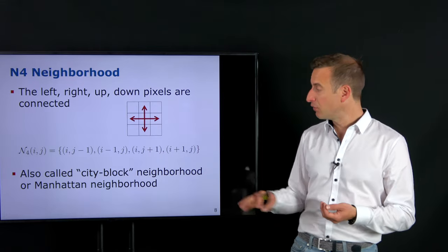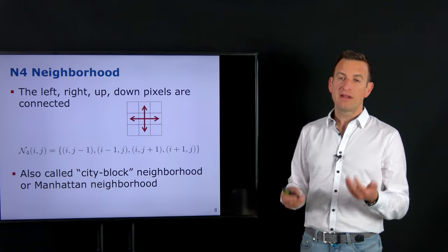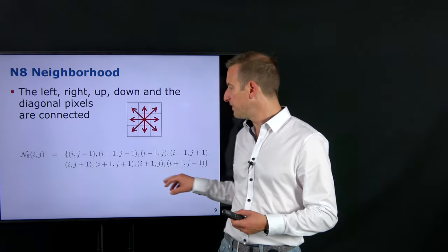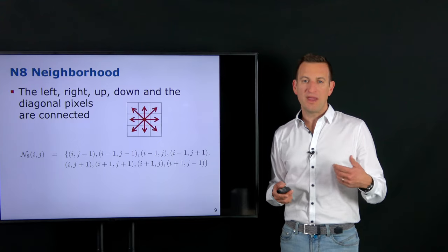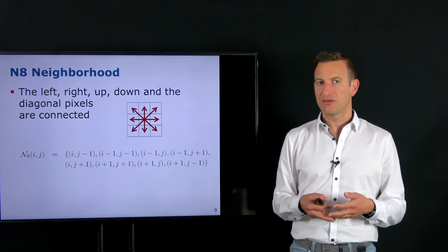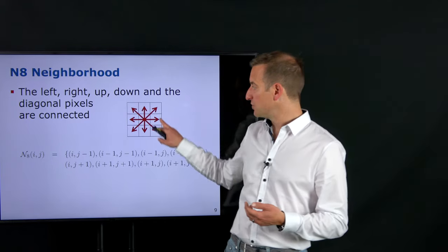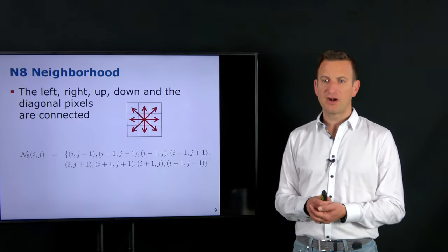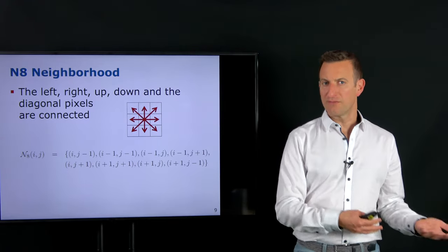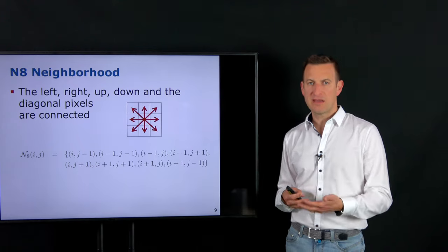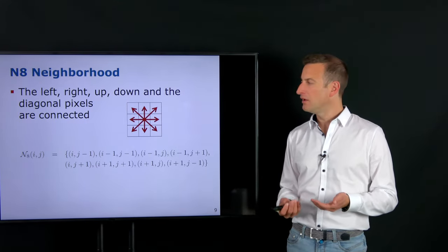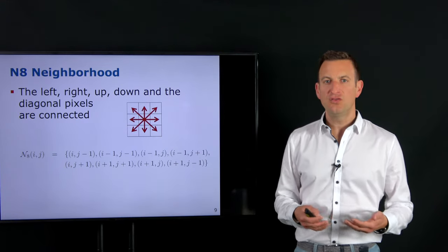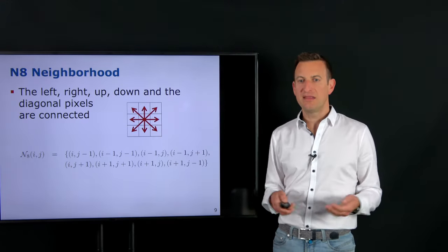In contrast, the N8 neighborhood contains all elements of the N4 neighborhood plus four additional diagonal neighbors, where we can increment and decrement both i and j simultaneously. This gives all eight surrounding pixels. Based on this definition of the neighborhood of an individual pixel, we can then generalize to compute connected components for the full image.